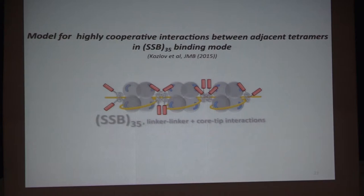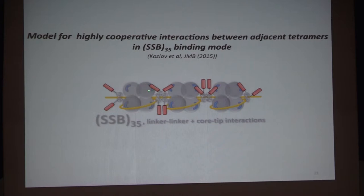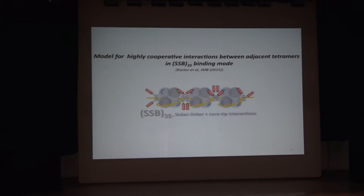Our model for cooperativity in the SSB35 mode is that since only two subunits are interacting with the DNA, the other two are free — so the acidic tips of one tetramer might interact with the DNA binding site of another. In addition, there seemed to be evidence for actual interactions between the linker regions of adjacent tetramers as well.